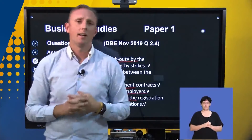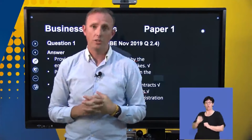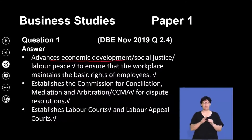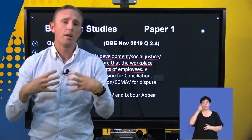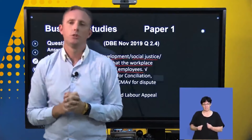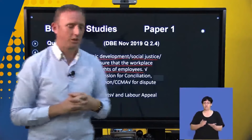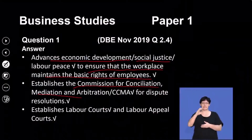In the past, it was illegal for employees to just start any trade union that they wanted. The act advances economic development and social justice to ensure that the workplace maintains the basic rights of employees, making sure that none of the employees' rights are infringed upon. So it establishes the Commission for Conciliation, Mediation and Arbitration — known as the CCMA.